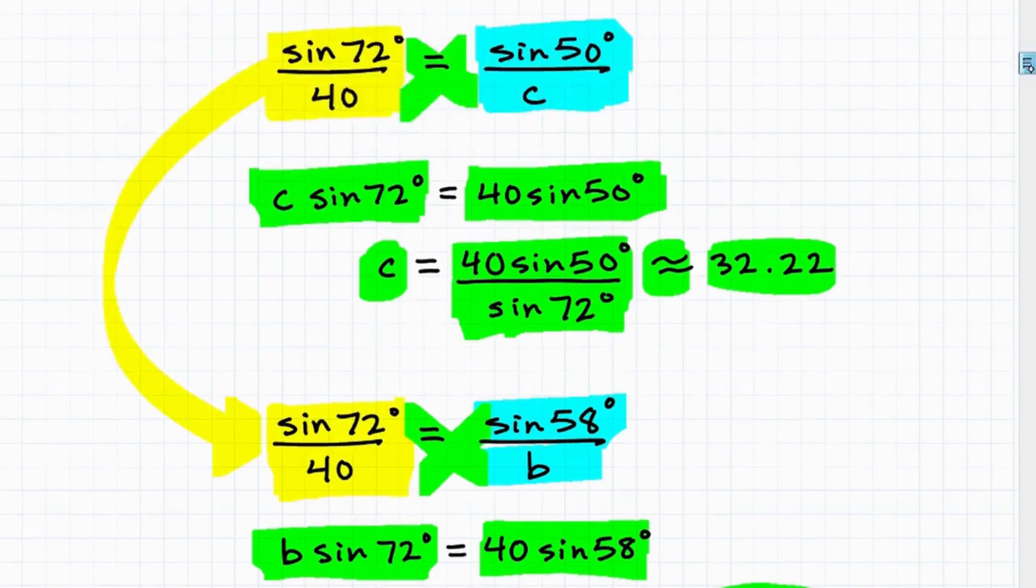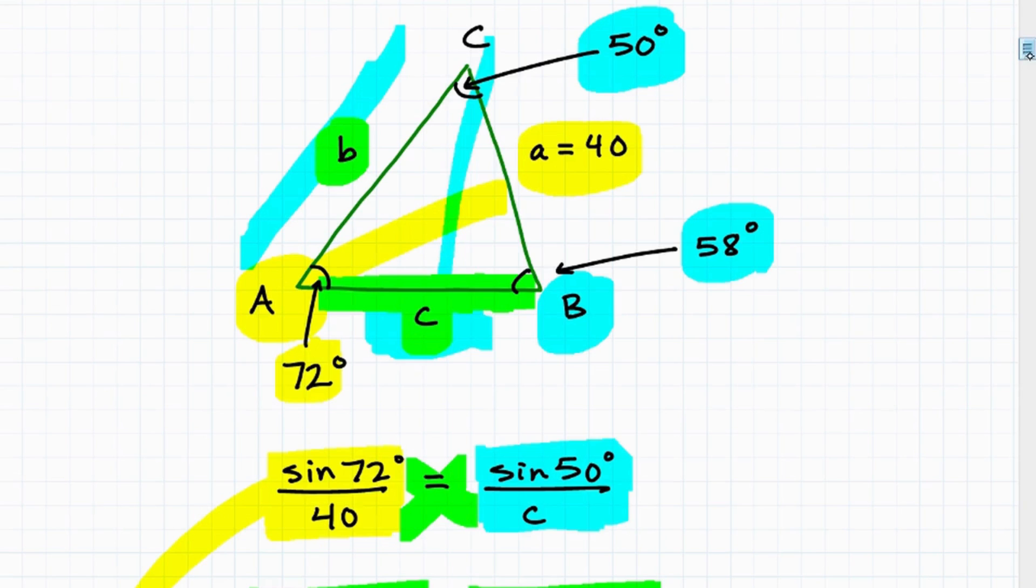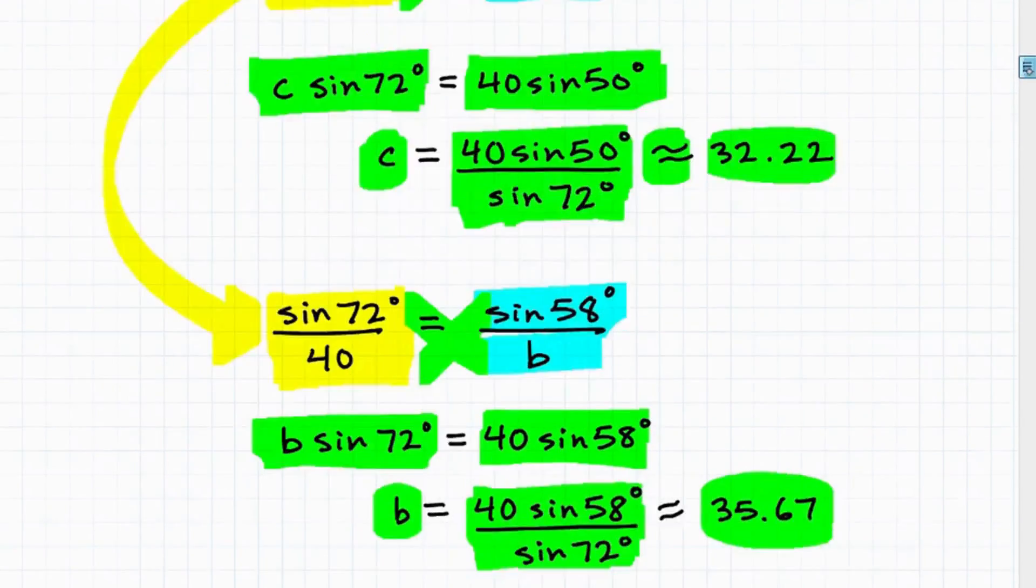Plug it into my calculator, and I get approximately 35.67. Okay. And that is it. So we got all our lengths, and we have all of our angles. And so by definition, we have solved the triangle.